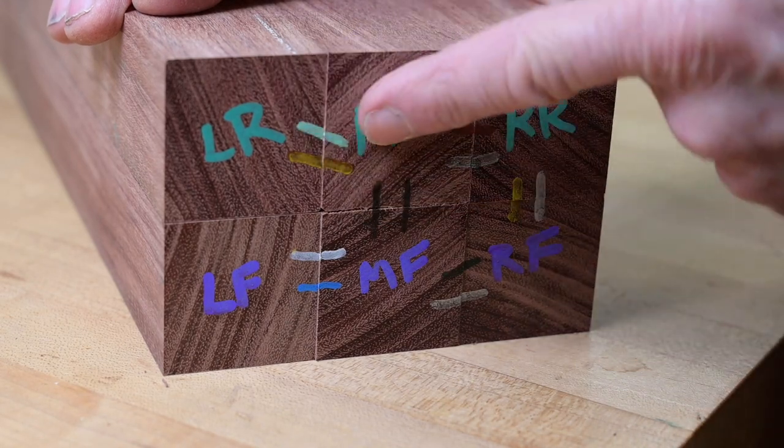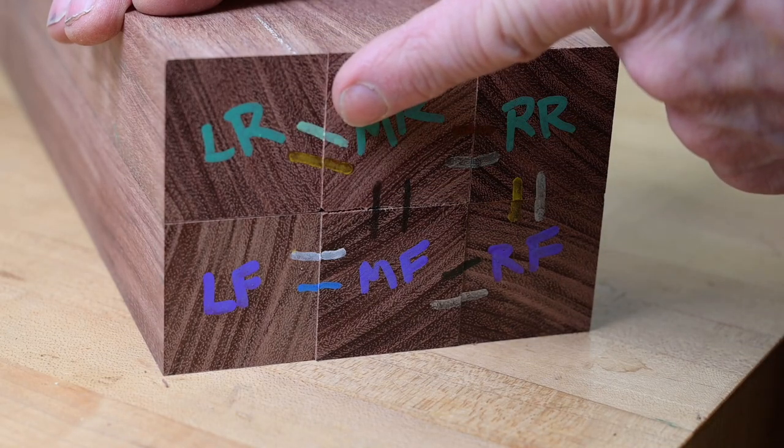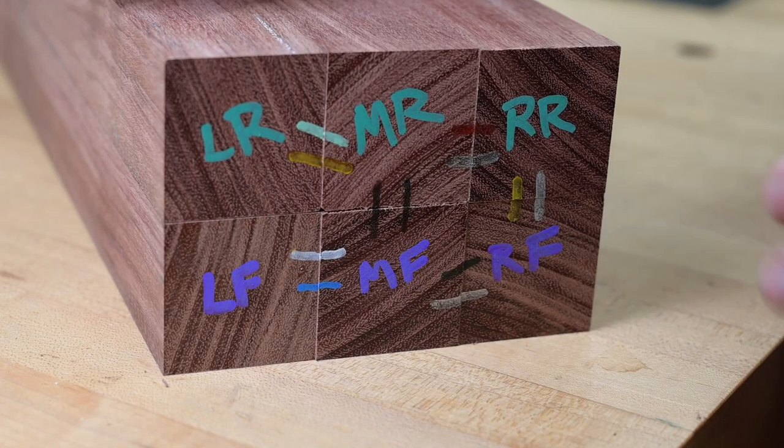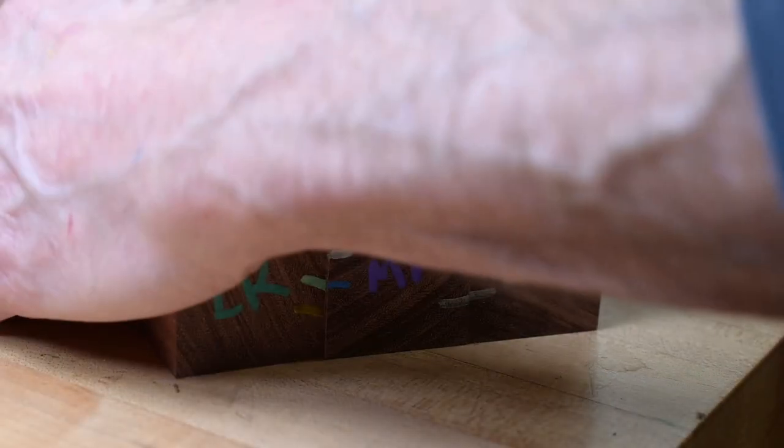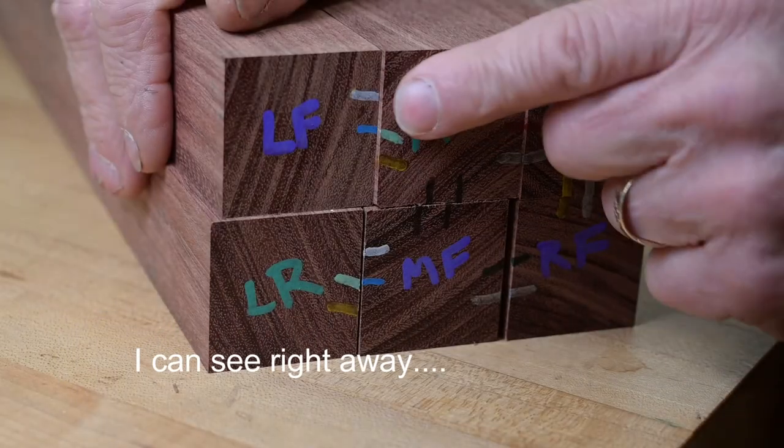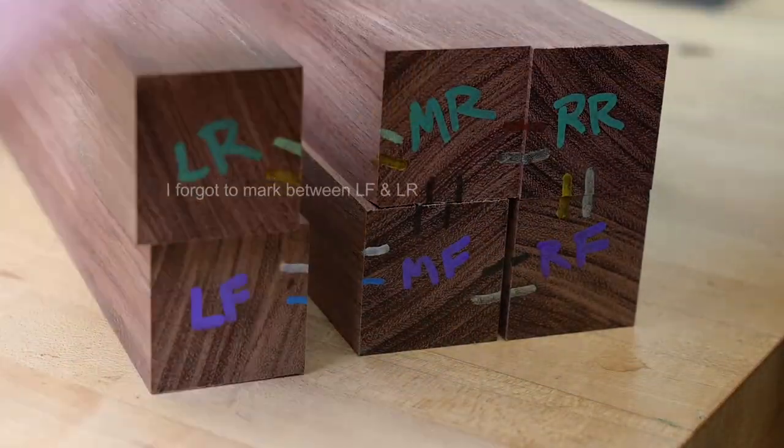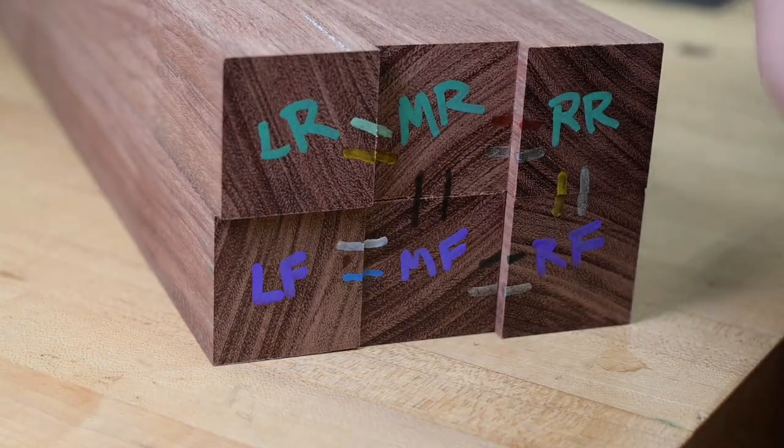But also I've got these little short dashes here, lines, and they're color coded. Each connection here has its own unique set of colors. So if I go to put this back together, I can see right away that this doesn't fit, and this does. So that helps me put it back in order really quick.